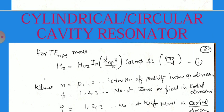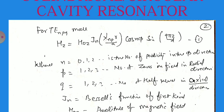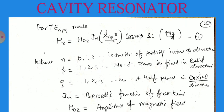n is the number of periodicity in the phi direction. p is 1, 2, 3, 4, 5, the number of zeros in the field in the radial direction. And q is 1, 2, 3, the number of half waves in the axial direction. Here Jn is the Bessel function of the first kind. H0z is the amplitude of the magnetic field.